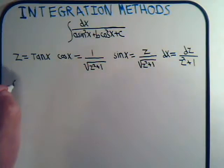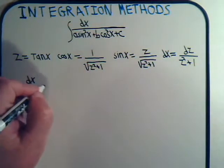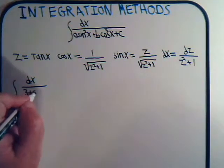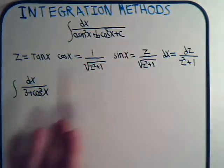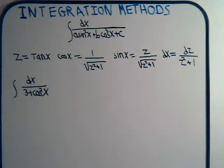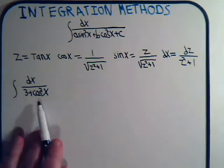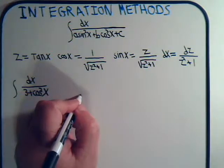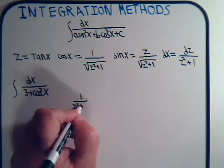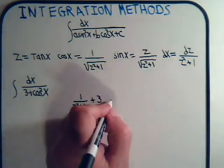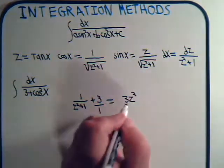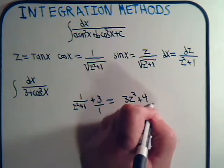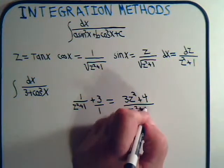Suppose we have the integral of dx divided by (3 + cos²x). Does that fit the recipe? Here b = 1, c = 3, a = 0 — no problem. Looking at the denominator: cos²x = 1/(z² + 1), so the denominator becomes 1/(z² + 1) + 3, which equals (3z² + 3 + 1)/(z² + 1) = (3z² + 4)/(z² + 1).